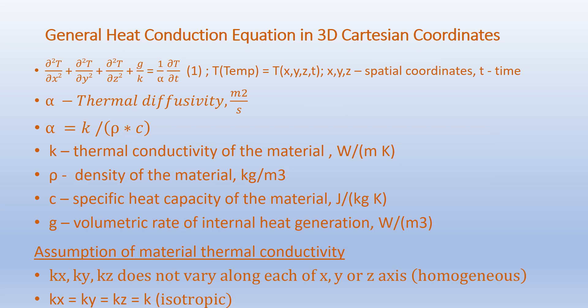The general heat conduction equation in 3D Cartesian coordinates is given as ∂²T/∂x² + ∂²T/∂y² + ∂²T/∂z² + G/K = (1/α)(∂T/∂t), where uppercase T represents temperature as a function of spatial coordinates x, y, z and time t, and lowercase t represents time in seconds. Alpha is the material property called thermal diffusivity, given in meter squared per second: alpha equals K over rho times C, where K is thermal conductivity in watts per meter-Kelvin, and rho is the density in kilograms per meter cubed.